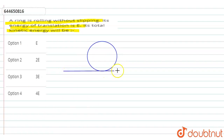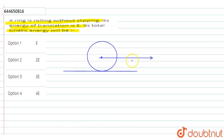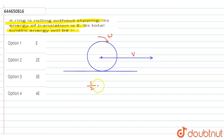Since the ring is rolling without slipping, there are two types of motion: one is translational motion and the other is rotational motion. Let us consider the translational velocity is v and the rotational velocity is omega. The translational kinetic energy is given as ½mv² = E.